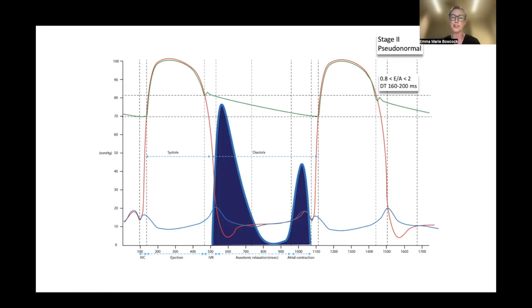A key thing is we can do the Valsalva maneuver. Does anyone want to tell me what would happen if this patient with grade 2 diastolic dysfunction did a Valsalva maneuver? What would happen to the E and A? Reversal of the wave by 50 percent. Beautiful, exactly.